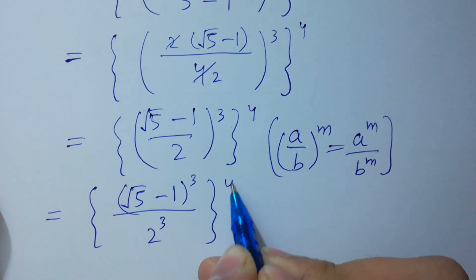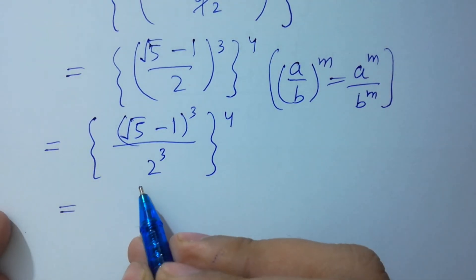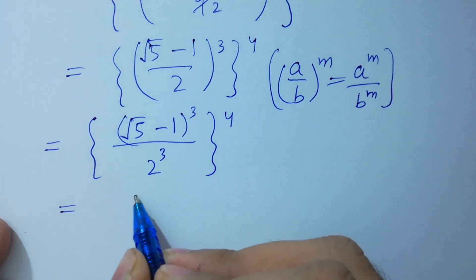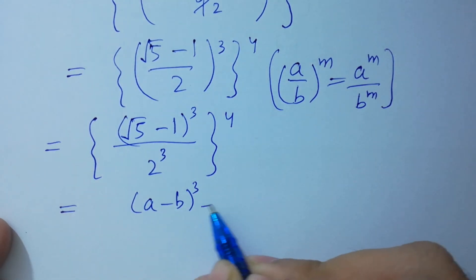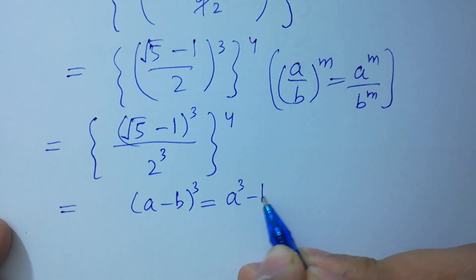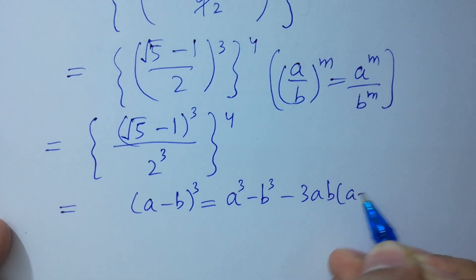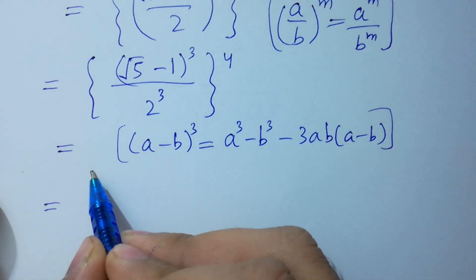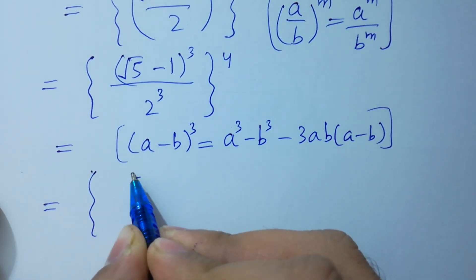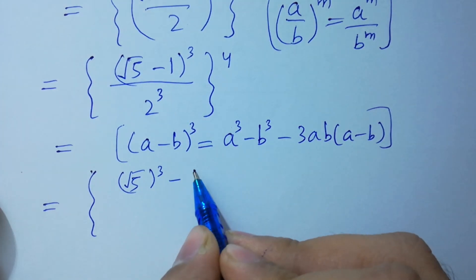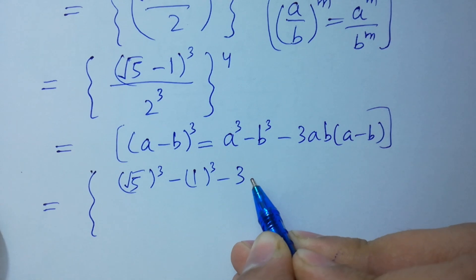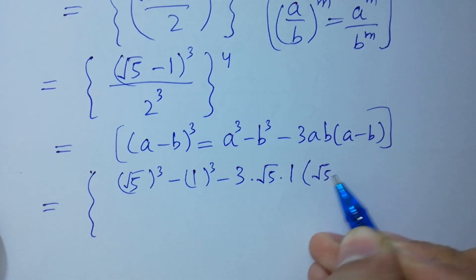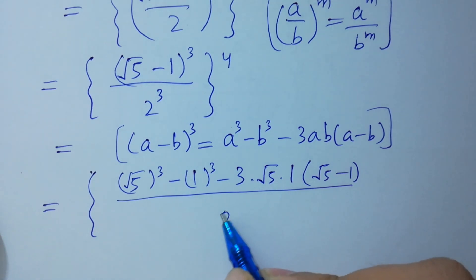To the whole power 4. Expanding using a minus b whole cube equals a cubed minus b cubed minus 3ab(a minus b): we have square root of 5 cubed minus 1 cubed, minus 3 times square root of 5 times 1 times (square root of 5 minus 1), over 2 cubed which is 8, to the whole power 4.